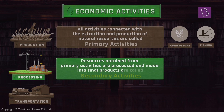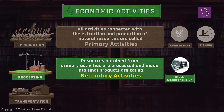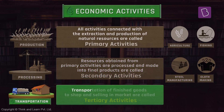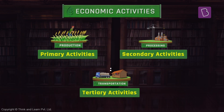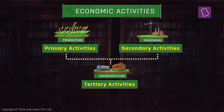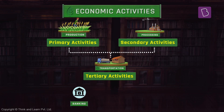Agriculture and fishing are examples of primary activities. These resources obtained from primary activities are processed in factories where they are made into the final products — these activities are called secondary activities. Steel manufacturing and cloth making are examples of secondary activities. The activities of transporting the finished goods to the shops and selling them in the market come under tertiary activities.